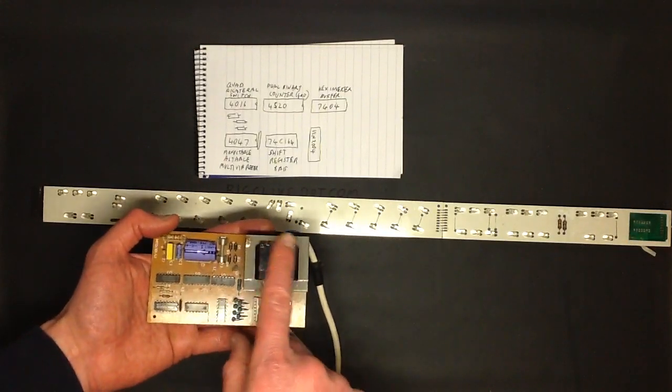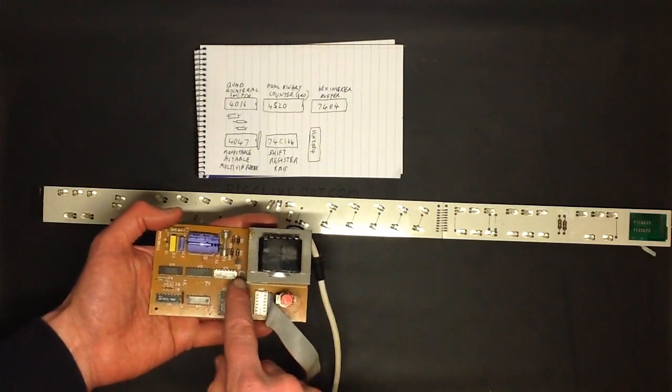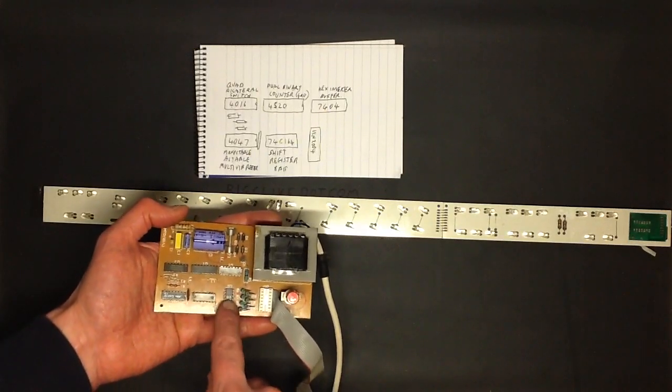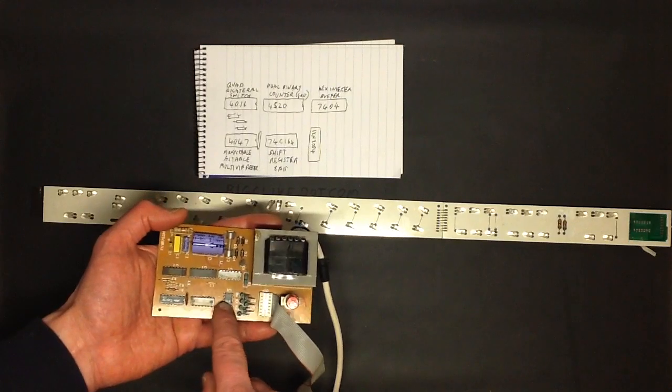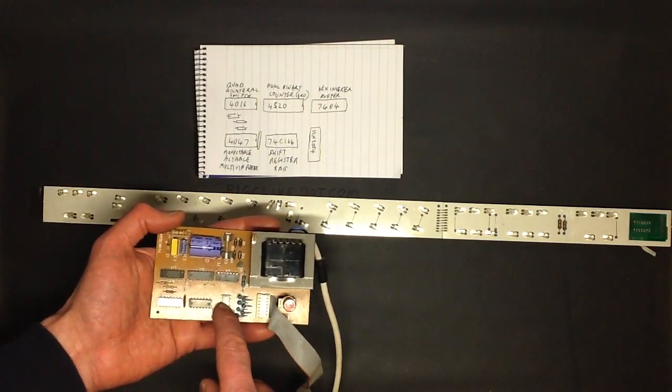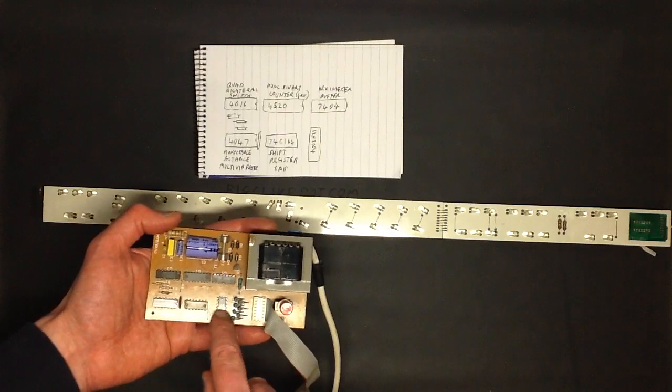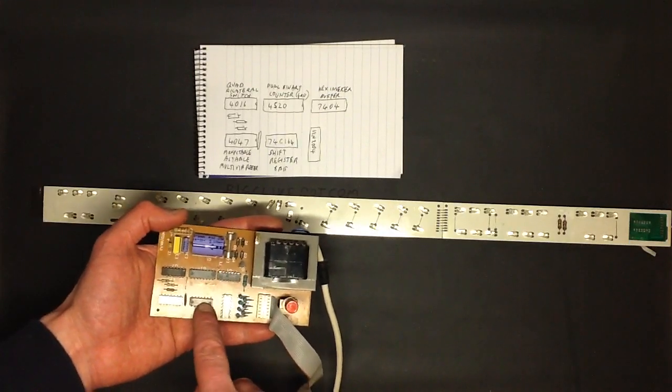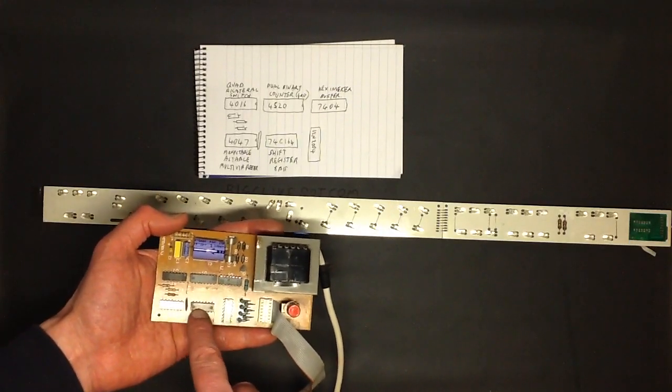The next chip down here, the only one that's really left, other than the ULN-2004, which is just a Darlington driver, is a TTL chip. Oh, there's actually two TTL chips. But this one is quite important. It's a 74C164. And it's a shift register.